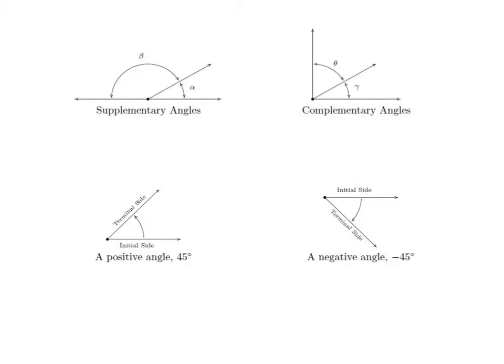You will also learn about certain types of angles. For example, if two angles add up to 180 degrees, or make a straight angle, they're called supplementary angles. If two angles add up to 90 degrees, they're called complementary angles.